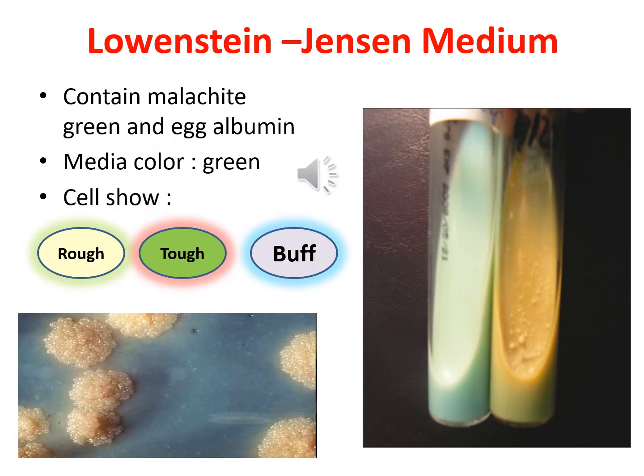Löwenstein-Jensen (LJ) medium is a growth medium specially used for culture of Mycobacterium species, especially M. tuberculosis. When grown on LJ medium, M. tuberculosis appears as brown granular colonies, sometimes described as buff, rough, and tough. The medium must be incubated for approximately 4 weeks due to the slow doubling time of M. tuberculosis. The medium appears green, opaque, and opalescent, and its main components are malachite green, glycerol (which enhances growth), asparagine, potato starch, coagulated eggs, mineral salt solution, potassium dihydrogen phosphate, and magnesium sulfate.